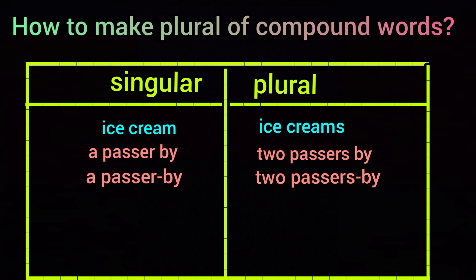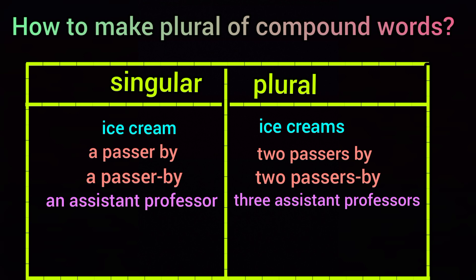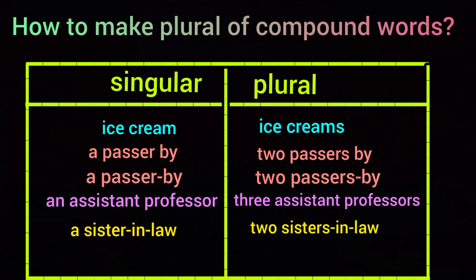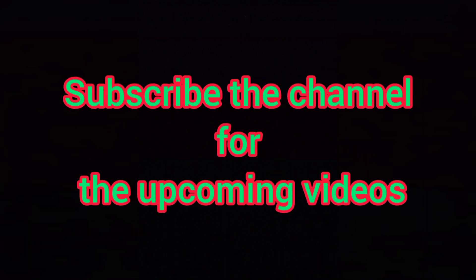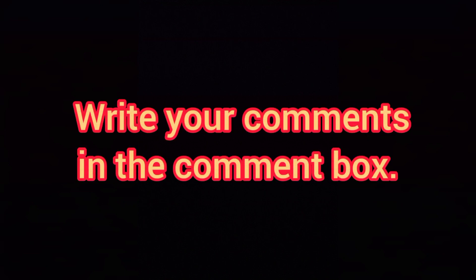For example, in singular we say 'an assistant professor' — this is an open compound word. To make plural we say 'three assistant professors,' because professor is the most significant word. Another example: singular is 'a sister-in-law,' and plural is 'two sisters-in-law,' because sister is the significant word. Another example: 'the sergeant major' becomes 'some sergeants major' in the plural. I hope you have understood this topic. In the next video we shall meet with another grammar topic, so keep watching.